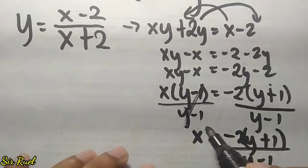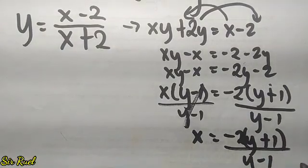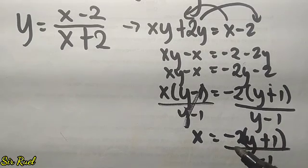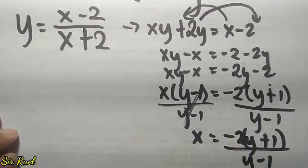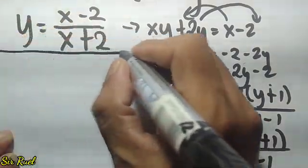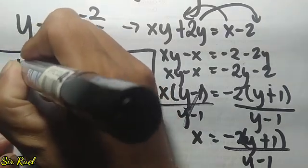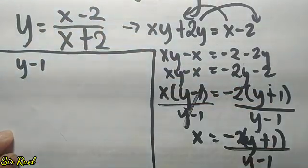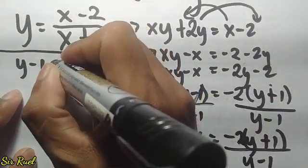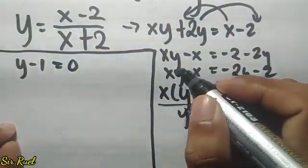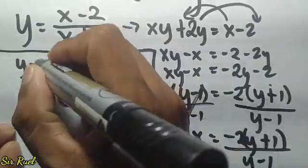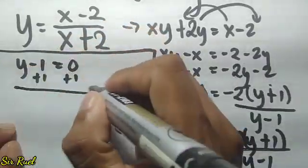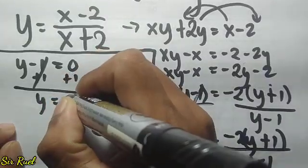Here is the value of our x. What we do now is the same as before: we take the denominator, which is y minus 1, and equate it to 0, then solve for y. We add 1 to both sides, the negative 1 cancels, and y equals 1.